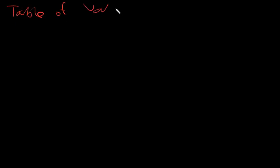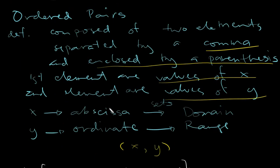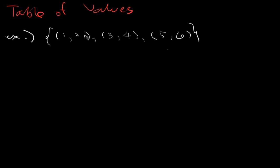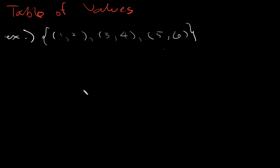Let's have another kind of representation, which is what we call the table of values. In the table of values, what you need to do is take your given relation and write the values down in a table. That's why it's called the table of values. On the first column you write x, and on the second column you write y.